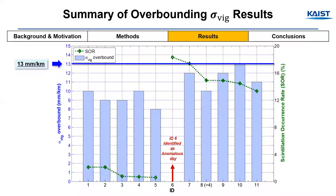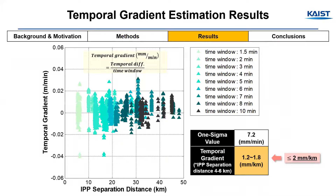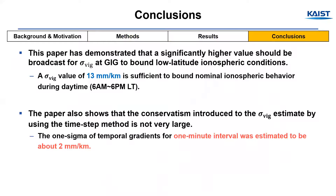This slide shows a summary of the results. The maximum value of the overbounded sigma is about 13 mm per kilometer, and the 1-sigma of temporal gradient estimates is about 2 mm per kilometer when a time window of 1 minute is used for the timestamp method. This paper has demonstrated that a significantly higher value should be broadcast for sigma-vig at Galeão Airport to bound low-latitude ionospheric conditions. This paper also shows that the conservatism introduced to the sigma-vig estimate by using the timestamp method of the standard is not significant.